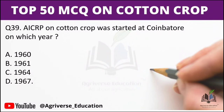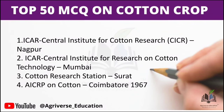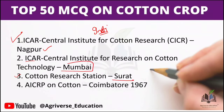Next important question: AICRP on cotton crop was started at Coimbatore in which year — 1960, 1961, 1964, or 1967? The right answer is 1967. Key institutes: Central Institute for Cotton Research (CICR) is in Nagpur; Central Institute for Research on Cotton Technology (CIRCOT) is in Mumbai; Cotton Research Institute is in Surat; and AICRP on Cotton is at Coimbatore.